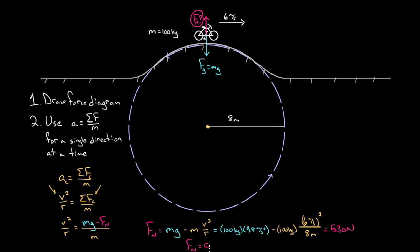The normal force of 530 Newtons is less than your weight of about 980 Newtons. This is what happens when you ride over a hill fast — you feel slightly weightless. If you've ever gone over a hill a little too fast in a car, you feel that 'whoa' in your stomach. If you go too fast, the normal force becomes zero, and you actually become airborne. So be careful driving over those hills — if you drive too fast, your normal force goes to zero and you become airborne.